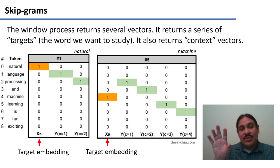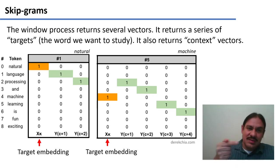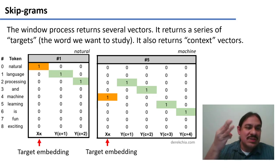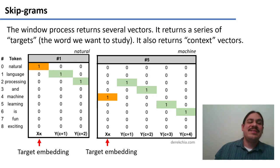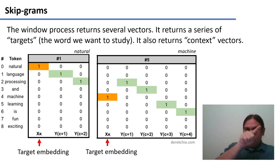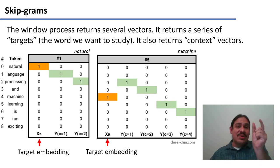In the matrix on the right, for row number five, the word machine, we have the target embedding: zero, zero, zero, zero, zero, one, zero, zero, zero, zero — a one there because this refers to the word machine. The rows in these matrices are the unique words found in the document. The target embeddings just have a one or a zero: one if it's the word we're looking at, and zero for everything else.